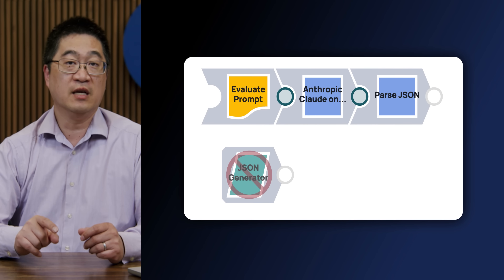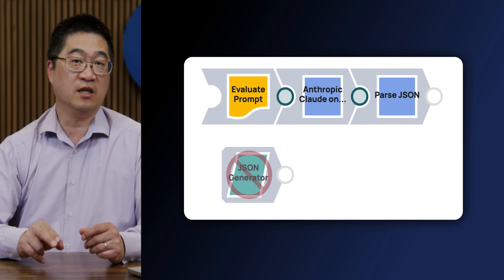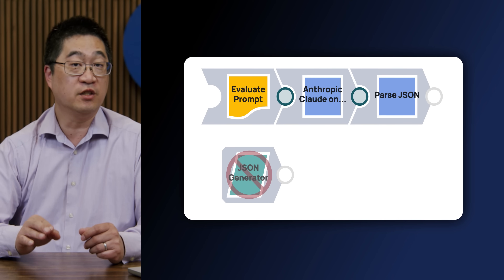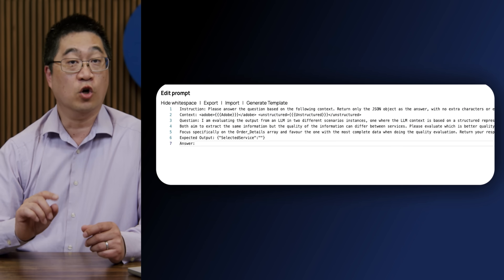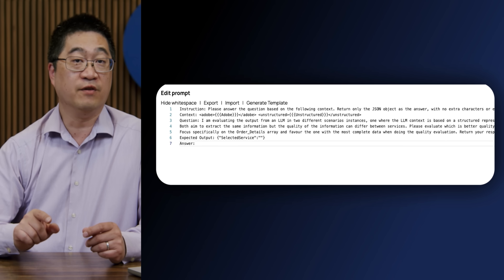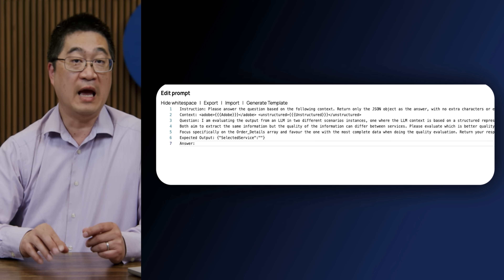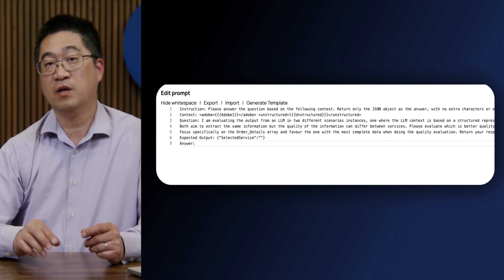This sub-agent takes two sets of extraction data and checks for accuracy. Looking at the prompt, you can see further detail on what we want the LLM to do and the selection criteria. The reason I wanted to show you this is that it demonstrates the modularity and the ability to iterate and expand on what the revenue reconciliation agent can do.